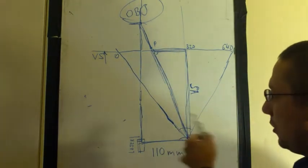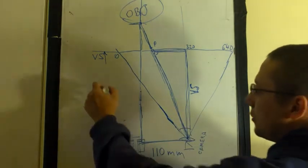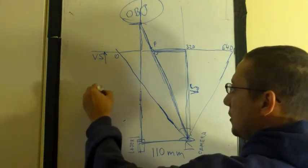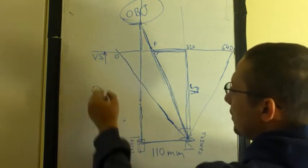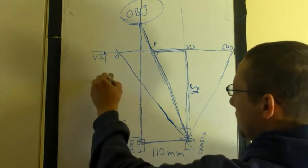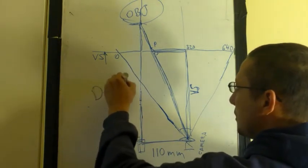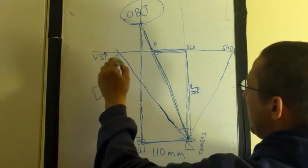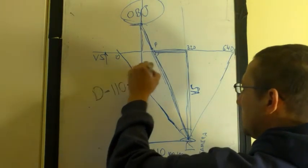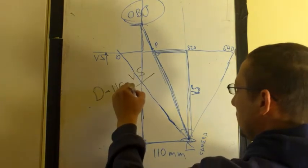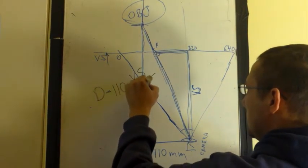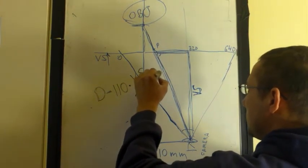Now, you know all other three numbers. So the distance, that one, equals 110 multiplied by Vs divided by 320 minus P.